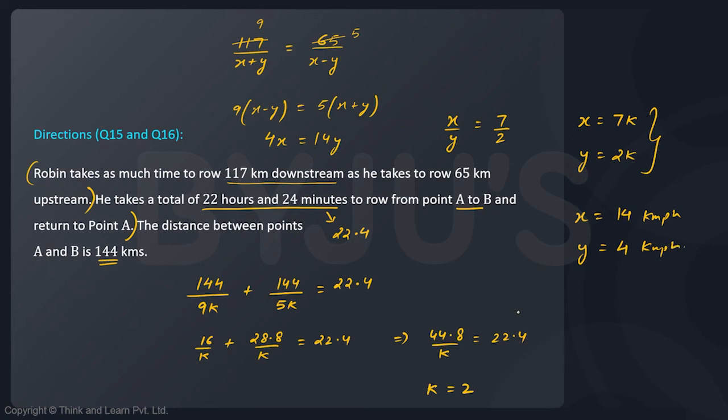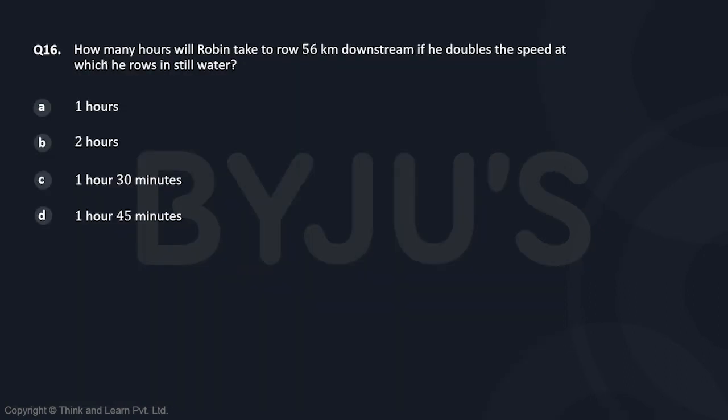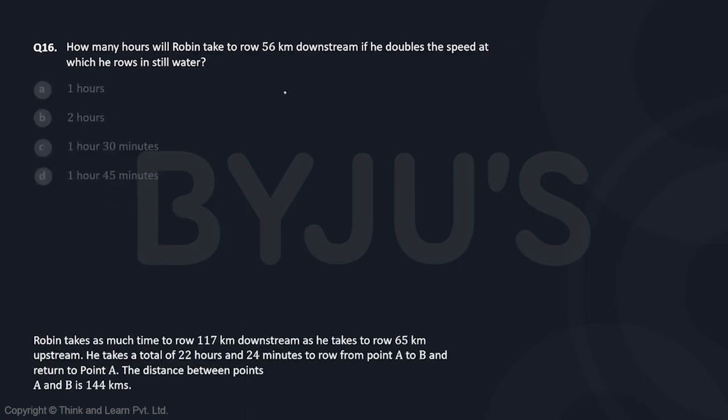All right, so this is the base of the question. We have got the values of X and Y and now let's see these two questions individually. Question number 16 says: how many hours will Robin take to row 56 kilometers downstream if he doubles the speed at which he rows in still water?